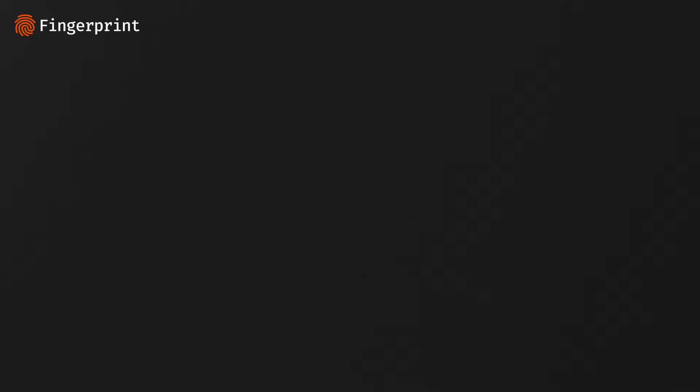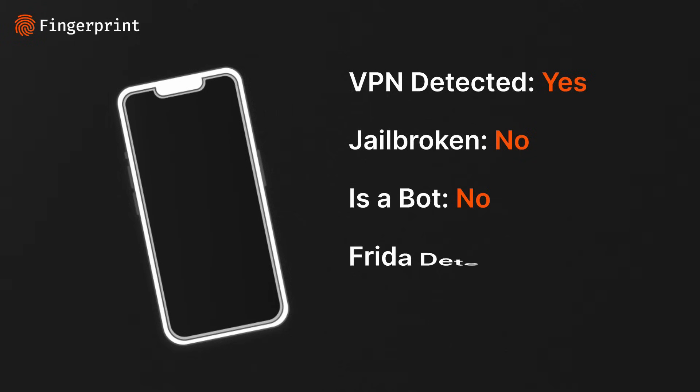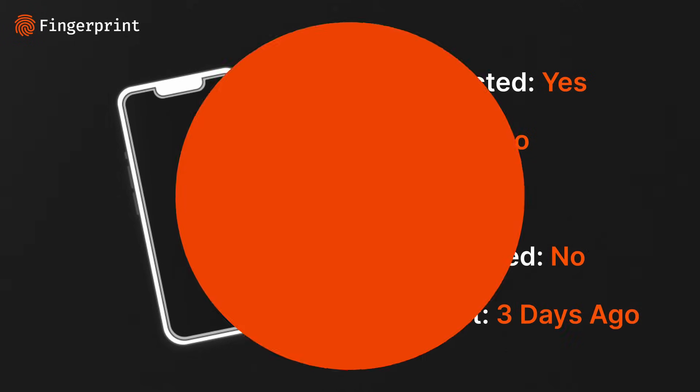Our second product, smart signals, enhances visitor insights by giving you additional attributes about the visitor's device. We can tell you if they're connecting through a VPN, whether the device is jailbroken, if it's a bot, and much more. Both identification and smart signals are developer products, accessed through a JavaScript snippet and our REST API, making it really easy to integrate into any system.